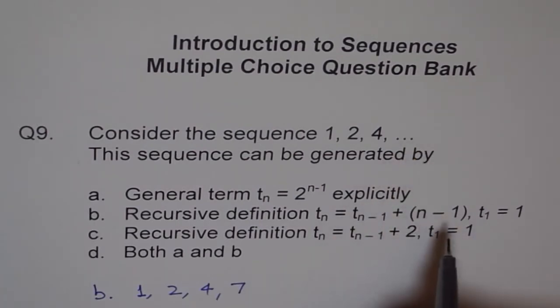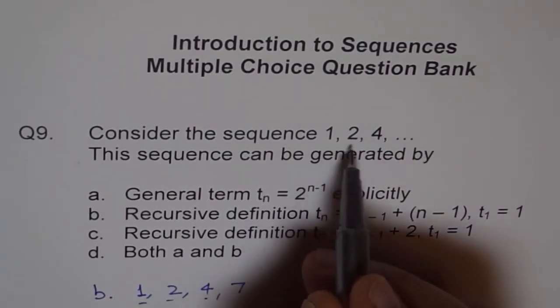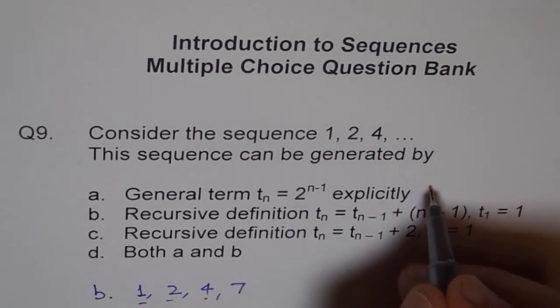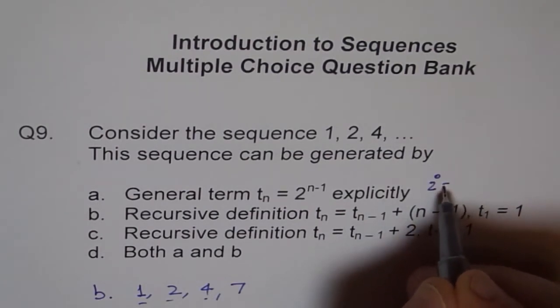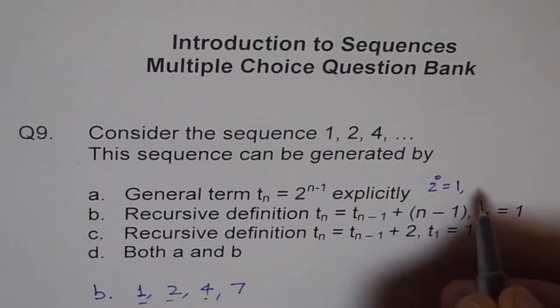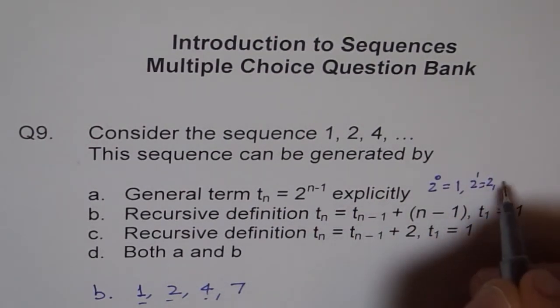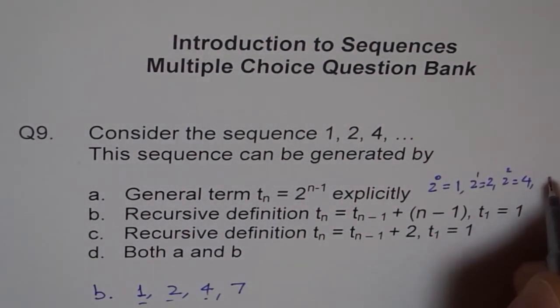We get 7 here as the fourth term, but we do get 1, 2 and 4 same as here. Let's check the fourth term here. The first term is 2 to the power of 1 minus 1 which is 2 to the power of 0, so that equals 1. Next term is 2 to the power of 1 which is 2. The third term is 2 to the power of 2 which is 4, and then we have 2 to the power of 3 which is 8.